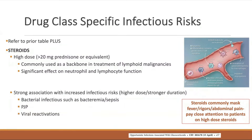Two specific drug classes to note: steroids are frequently used as adjuncts to chemotherapy regimens in heme malignancies, or to treat adverse reactions from immunotherapy. High-dose steroid use is defined as prednisone 20 mg/day or equivalent for over four weeks. Those patients are specifically at risk for PCP and would require prophylaxis. Steroids also commonly mask signs of infection such as fevers, abdominal pain, and rigors — so look for other signs and perform a careful physical exam.